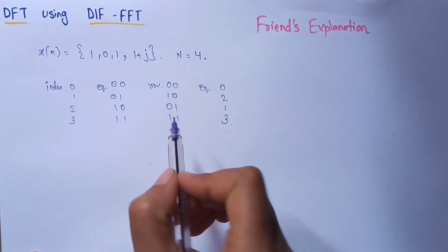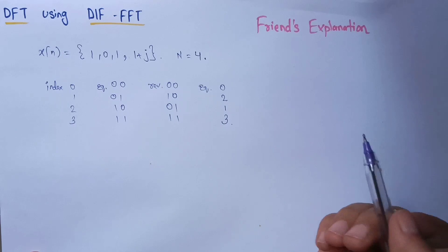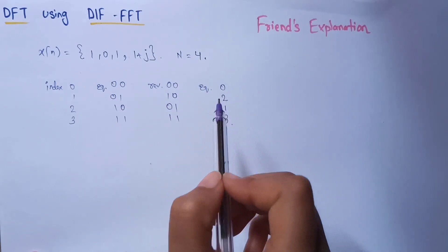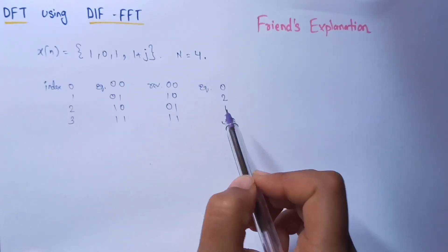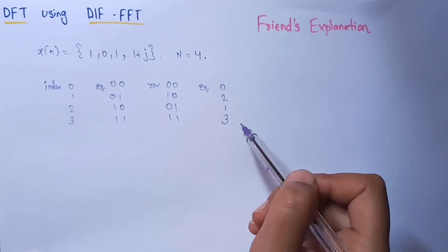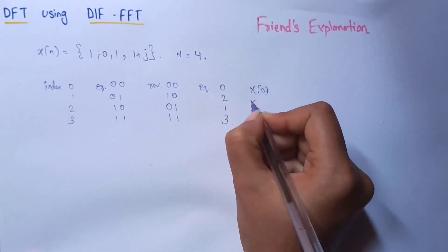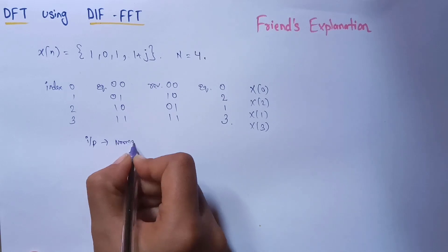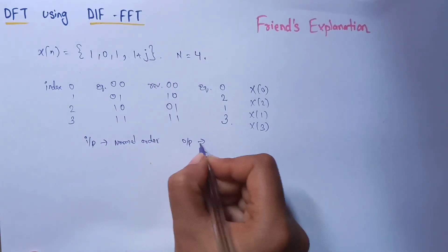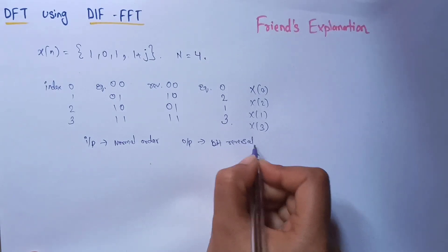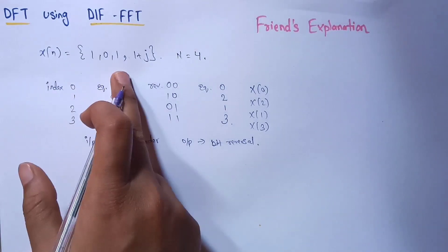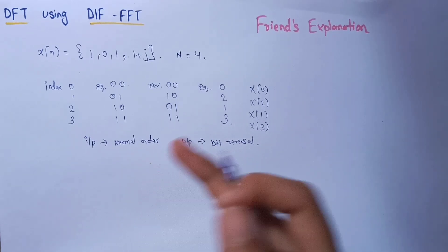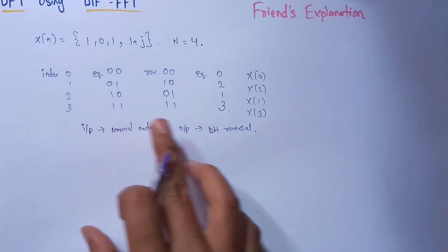These bit-reversed indexes are taken for the frequency domain sequence. In decimation in time we took these indexes for the time domain sequence, but in decimation in frequency we take these indexes for the frequency domain sequence. So the conclusion is: the input is in normal order and the output indexes are in bit reversal. Time domain is in normal order and frequency domain is in bit reversal.